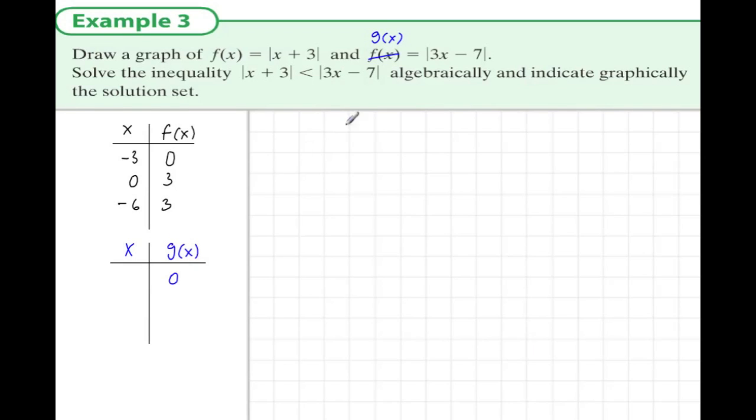Looking at g(x), when would g(x) = 0? It would be when x = 7/3. I want some values either side of this. When x = 0, the modulus is 7. And when x = 4, which is a little bigger than 7/3, we'd have the modulus of 5.